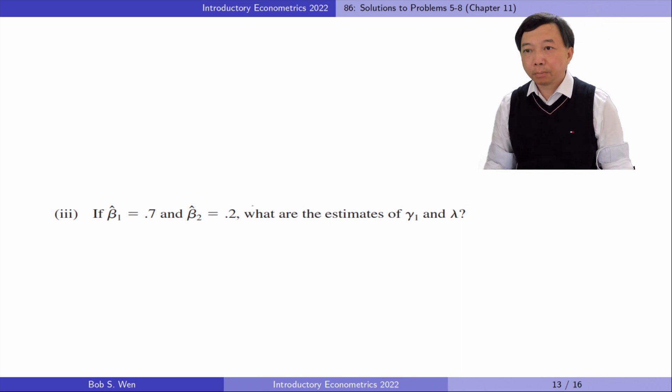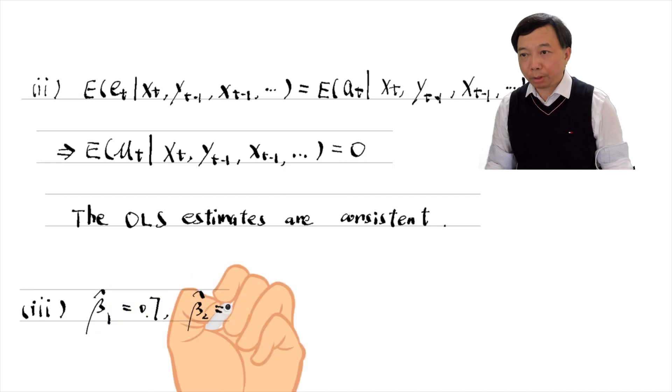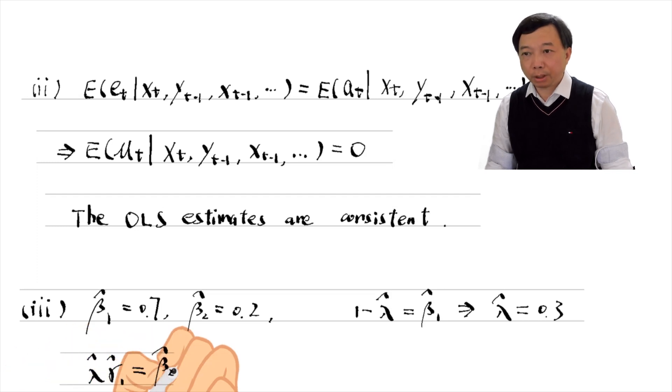In part 3, if beta_1_hat equals 0.7 and beta_2_hat equals 0.2, what are the estimates of gamma_1 and lambda? Plug these values in the relationship equations and we have lambda_hat equals 0.3 and gamma_1_hat equals 2/3.